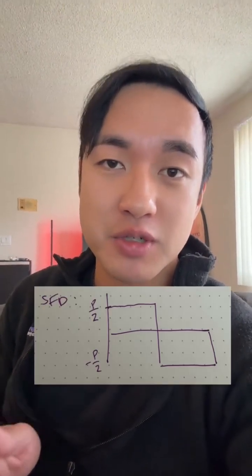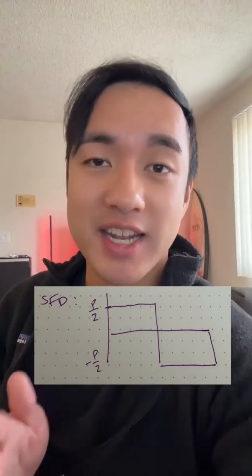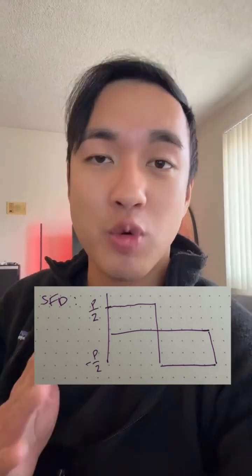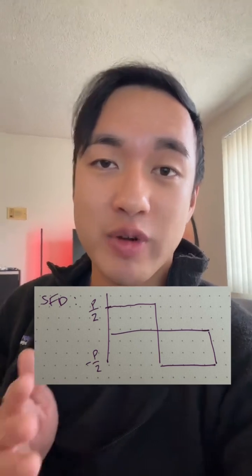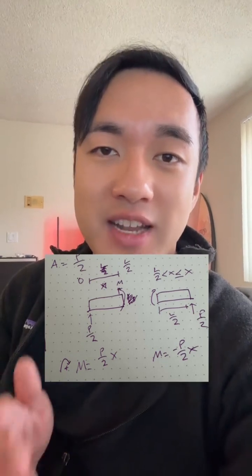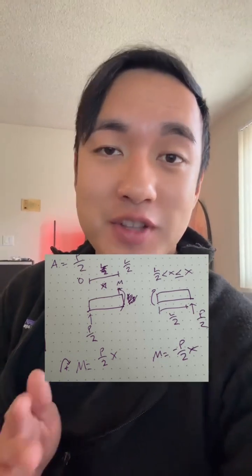The shear force diagram is going to start at P over 2 all the way up until the halfway point of the beam, where P is applied, and then it drops to negative P over 2. The reaction force at B brings it back to zero. Using the segment approach, for the first half of the beam M equals P over 2 times X, and for the last half M equals negative P.